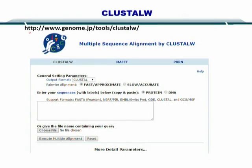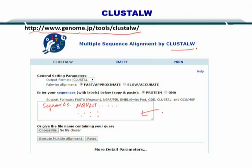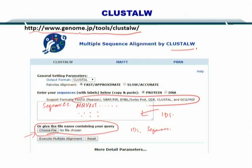Here, at this URL, you can access ClustalW. This is the front page for the software, and you can put your sequences here and compare them, or you can simply input the IDs here as well. Moreover, you can upload an entire file of IDs or sequences in this format, and you can execute multiple sequence alignment.